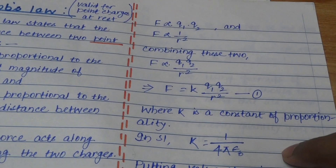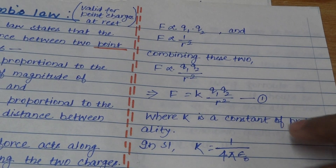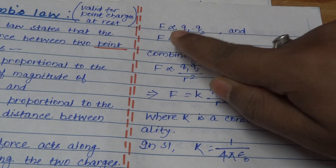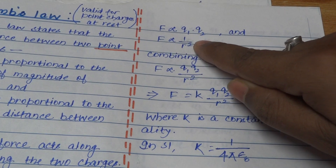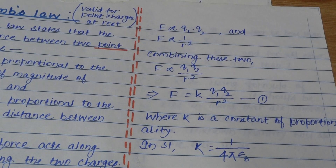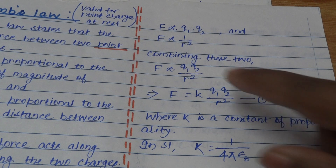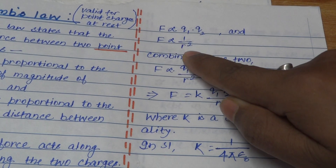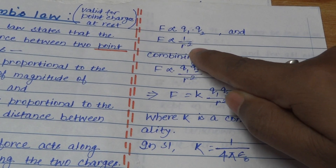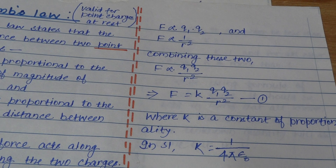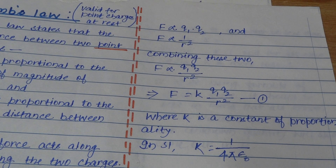According to Coulomb's law, the electric force is directly proportional to the product of the magnitudes of the charges — magnitudes meaning we consider the charges without their mathematical sign. This electric force is also inversely proportional to the square of the distance between them. This is often known as the inverse square law.